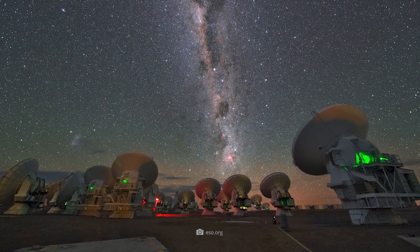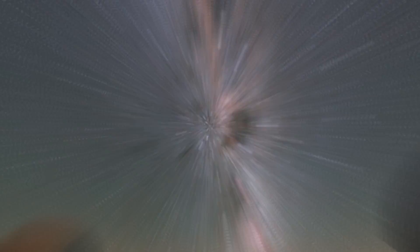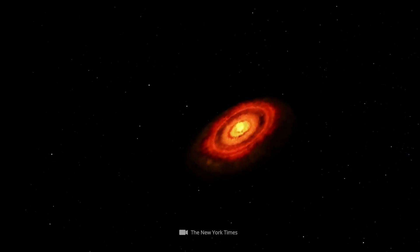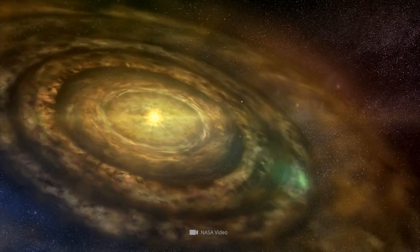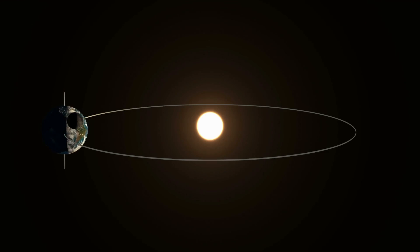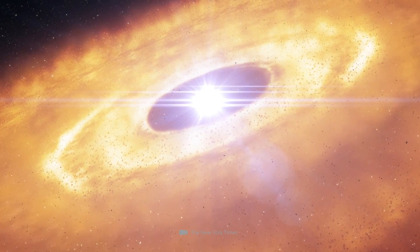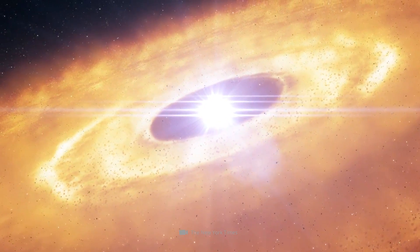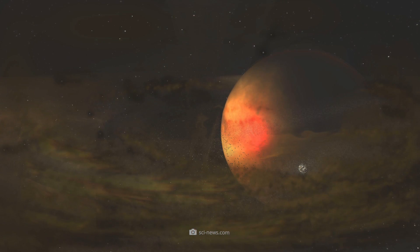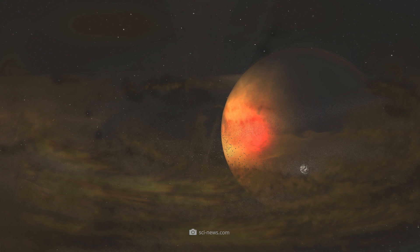The images, provided by the ALMA Observatory in Chile, show that the moon-forming disk has a diameter of about 100 million miles, roughly equivalent to the distance between the Sun and the Earth. According to experts, the circumplanetary disk around the exoplanet has enough material to form up to three moons the size of Earth.